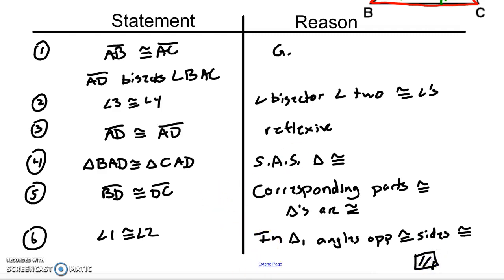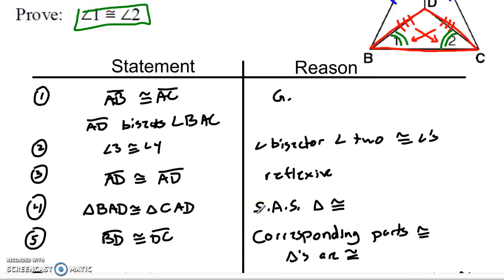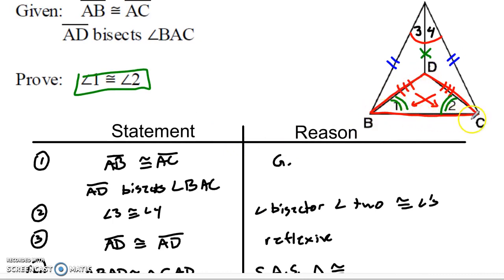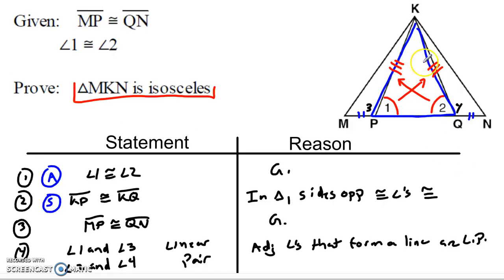One important point: you've got to be talking about within one triangle for this to work. Students often feel that if they have any pair of congruent sides, they can say the angles are congruent — but it has to be within a triangle. Here we're working in triangle BDC, and inside that triangle I've got two congruent sides, which means two congruent angles across from those sides.